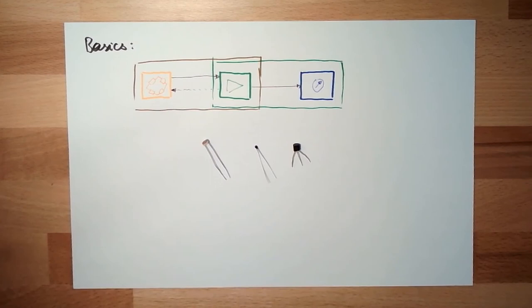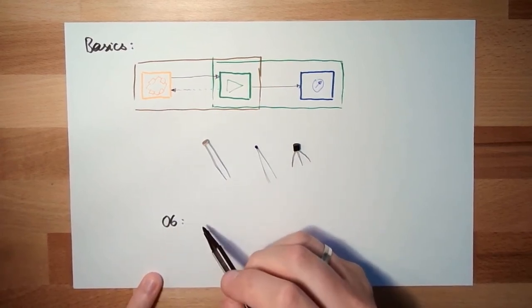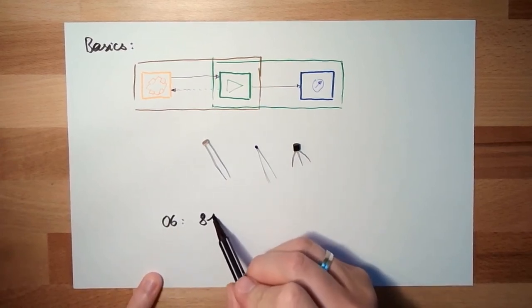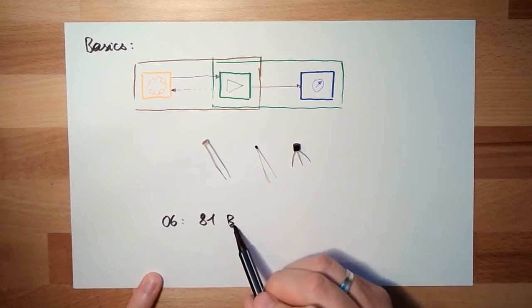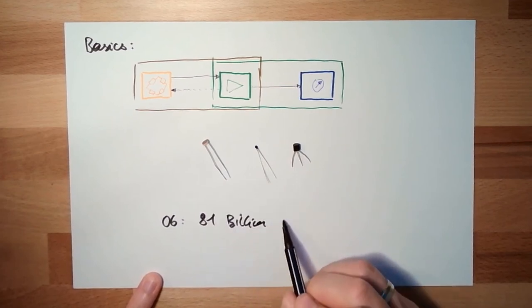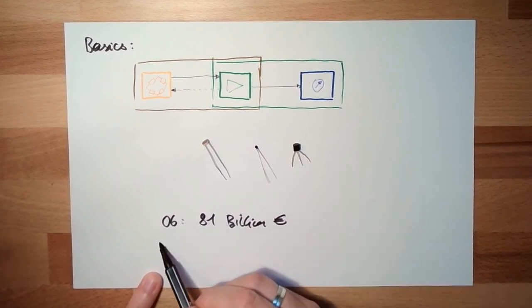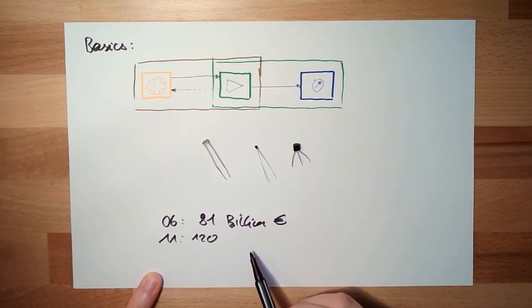The sensor market itself is pretty big nowadays. And the numbers are rising and rising and rising. 2006, we had around 82 billion euros. In 2011, we had already around 120 billion. And in 2016, we had around 185 billion euros in the sensor market.